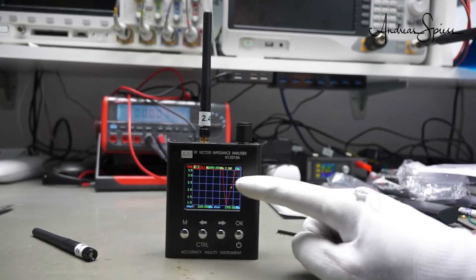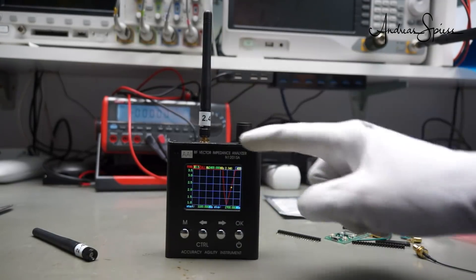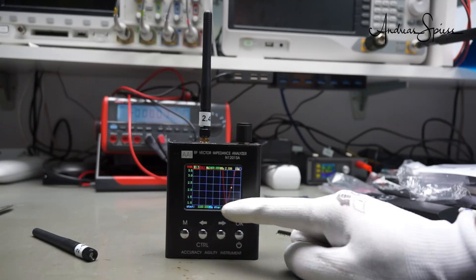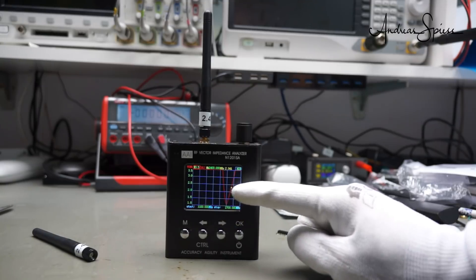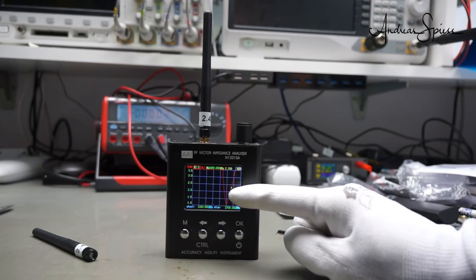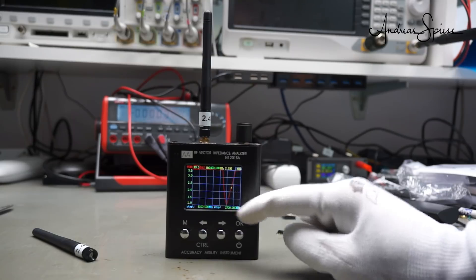By the way, this is how a better 2.4 GHz antenna looks like. It has a dip. It is also not at 2.4, it is probably at 2.3. But it goes nearly down to 1.1. And here, at 2.4 GHz, it has still a SWR of about 2.2 or so. So it is usable. It is not good. It is usable.